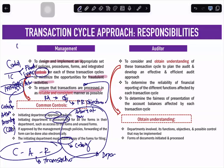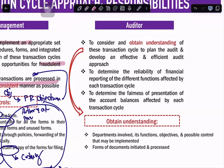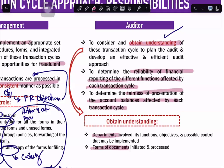Next, we go to the responsibility of the auditor. The first responsibility is to obtain an understanding — we need to obtain an understanding of the internal controls in place. Once we obtain that understanding, we test the reliability of the internal control in financial reporting and ultimately assess the fairness of presentation of the account balances affected by each transaction cycle. To obtain an understanding, we look into the different departments, the activities or documents, and the internal controls in place on those three items.